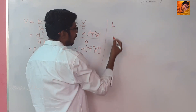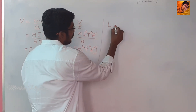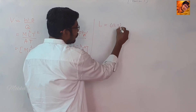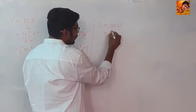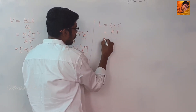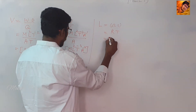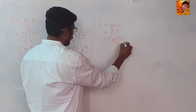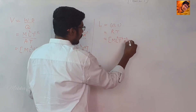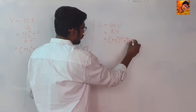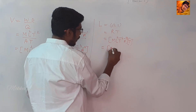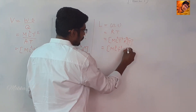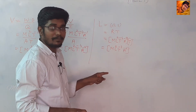Inductance — symbol L. The unit is ohm-second. Ohm is resistance, second is time. Now substitute: M L² T⁻⁴ A⁻² into T, giving M L² T⁻³ A⁻². Next, capacitance.